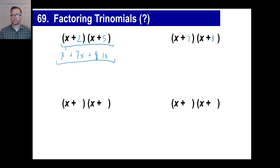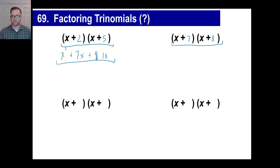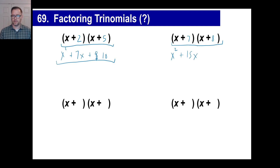Go ahead and pause again, and now we're going to multiply x plus 7 times x plus 8. First thing's going to be an x squared, and we get x times 8, which is 8x. And we have a 7x — add those two together. 8x plus 7x is 15x. Then we have 7 times 8 is 56.